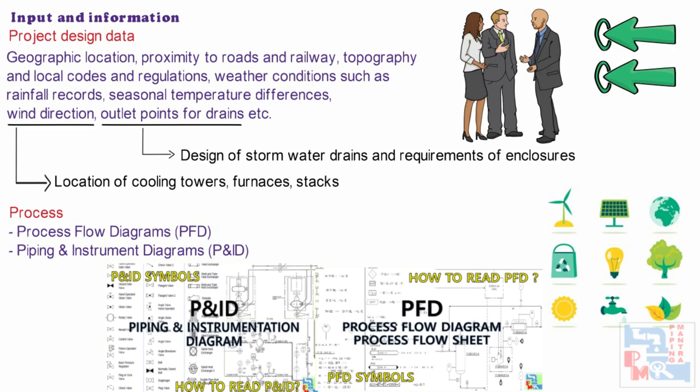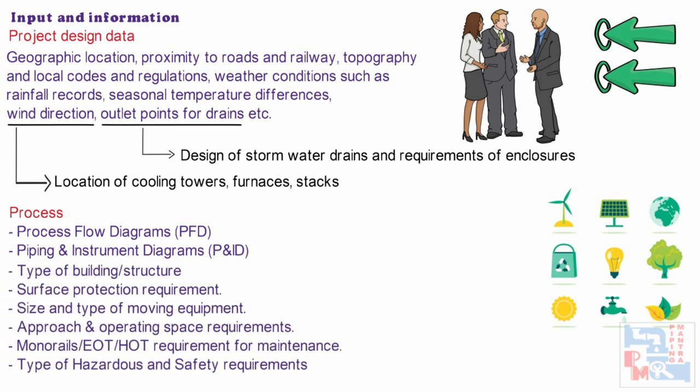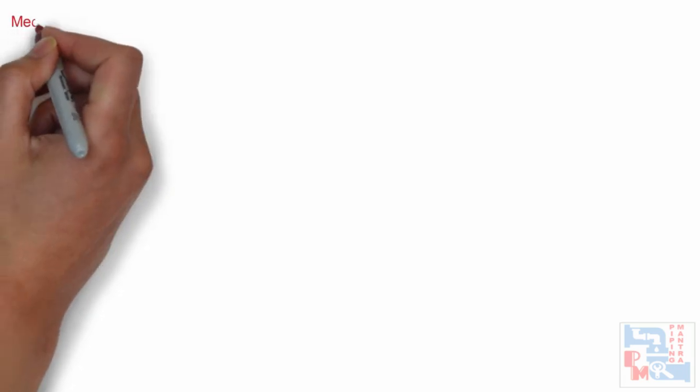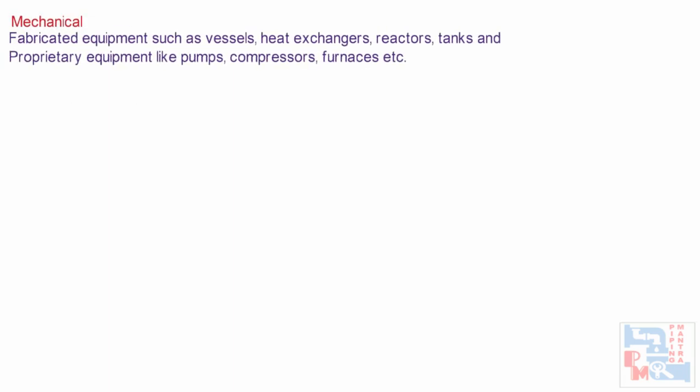You can see our video on both P&IDs and PFDs — links are given in the description box below. We also need: type of buildings or structures, surface protection requirements, size and type of moving equipment, approach and operating space requirements, monorails, EOT, hoist requirements for maintenance, and type of hazardous and safety requirements. The input required from mechanical includes fabricated equipment such as vessels, heat exchangers, reactors, tanks, and proprietary equipment like pumps, compressors, furnaces, etc. Equipment should be grouped to have optimum location for minimum pipe run as well as to follow the process flow sequence.